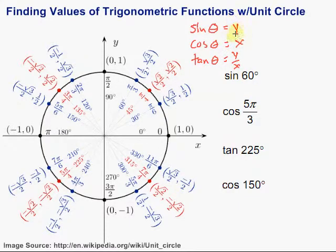The sine is just the y coordinate, so I'm just going to pick out that y coordinate, and that's going to be my sine. So the sine of 60 degrees is equal to the square root of 3 over 2.